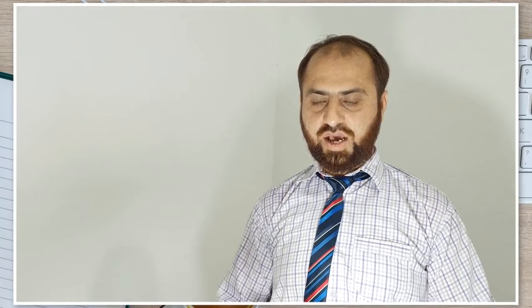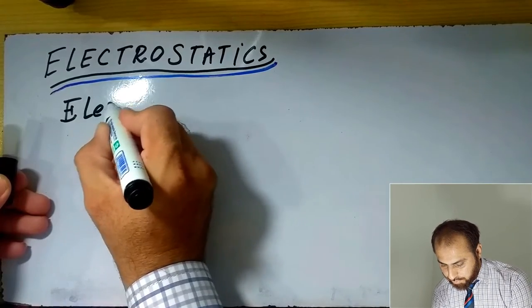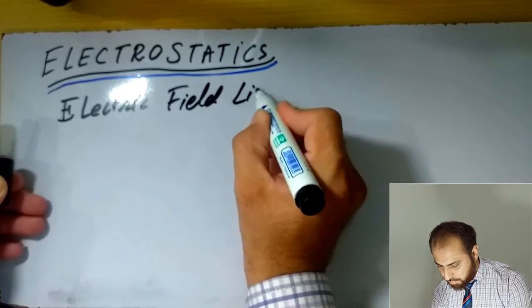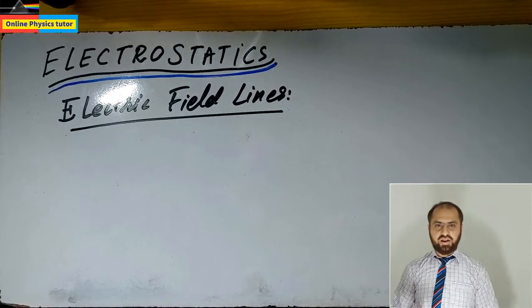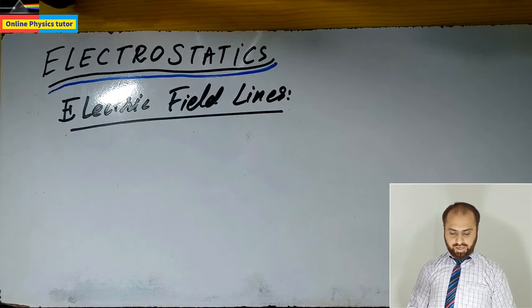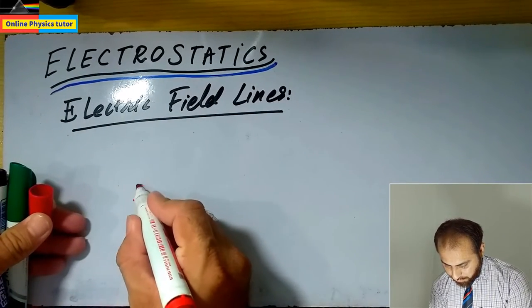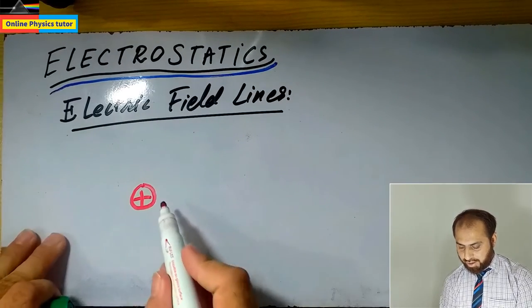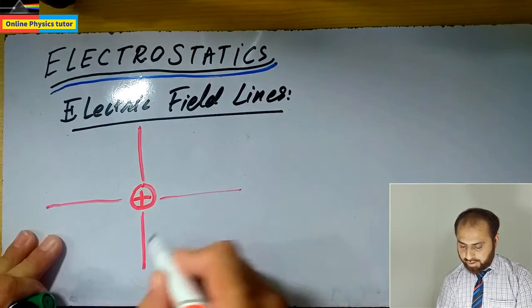In electrostatics, we'll now discuss electric field lines. We draw the electric field lines for positive and negative charges. It is convention that for positive charge, we draw field lines directly radially outward.